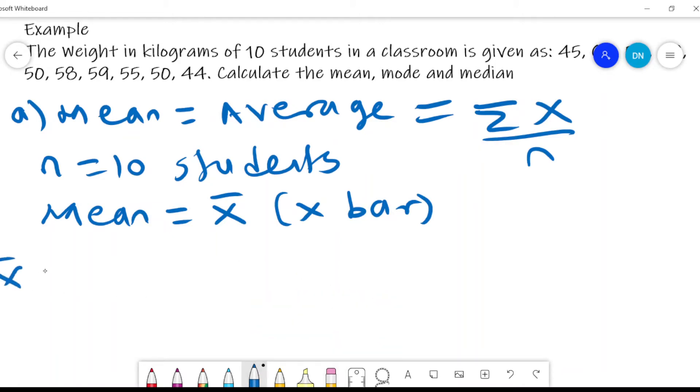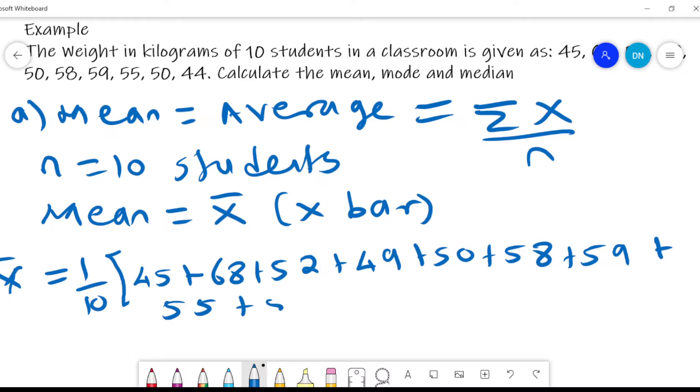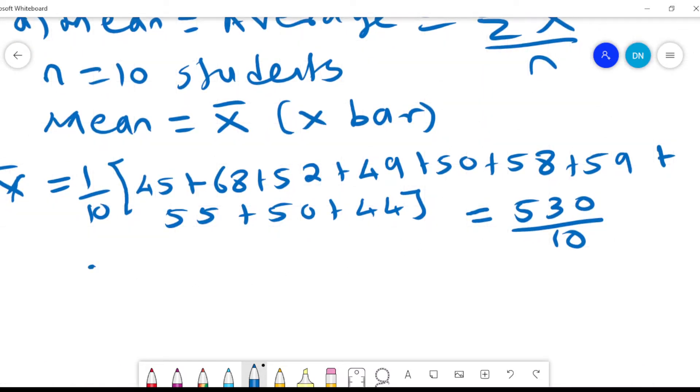And the x bar is given by 1 over 10 of the next set of values: 45 plus 68 plus 52 plus 49 plus 50 plus 58 plus 59 plus 55 plus 50 plus 44. So we sum all those. And this is 530 divided by 10 after you do the summation of that. And that means the average or the mean weight is 53 kilograms. So the average weight is 53 kilograms.